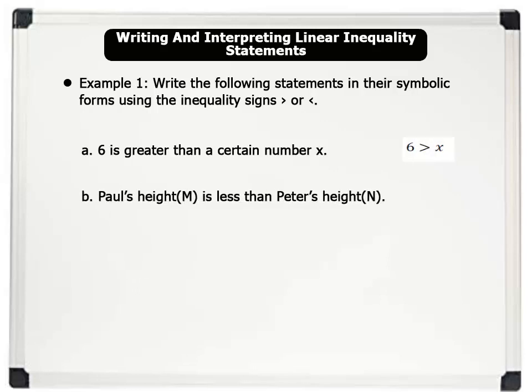B. Paul's height, M, is less than Peter's height, N. This can be written as, M is less than N.